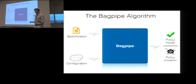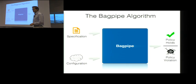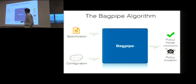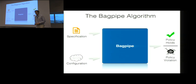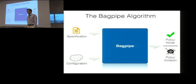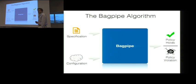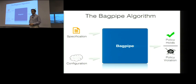To help internet service providers with this problem, we developed a tool called BackPipe. BackPipe takes two inputs: first, a specification of the policies that ISPs want to enforce, and second, the configuration that we want to check. The output of the tool is then either that the specification holds, or a counter-example where the configuration does not correctly implement the specification.